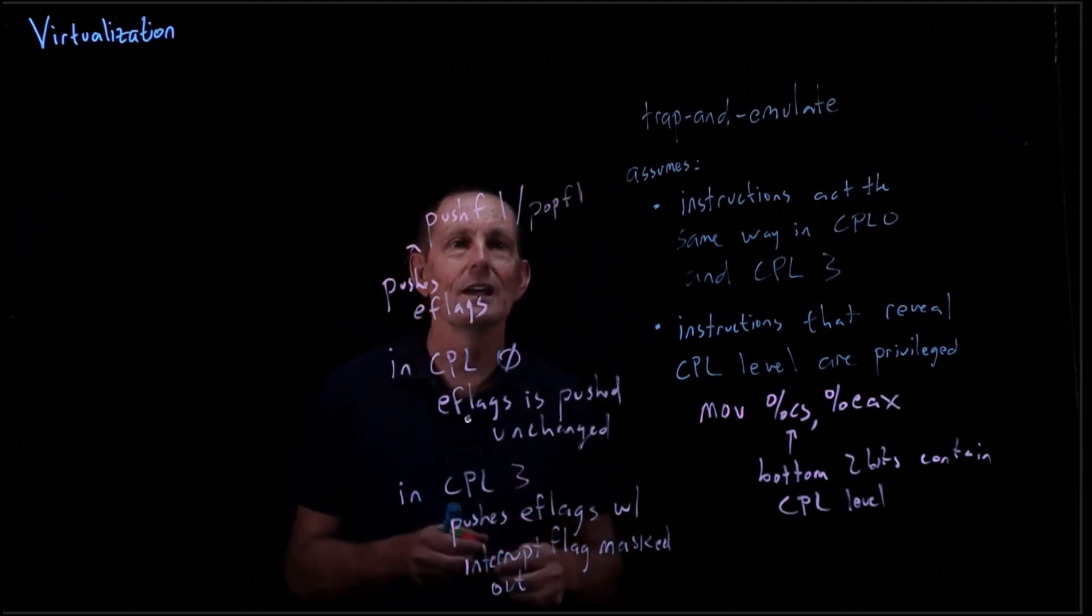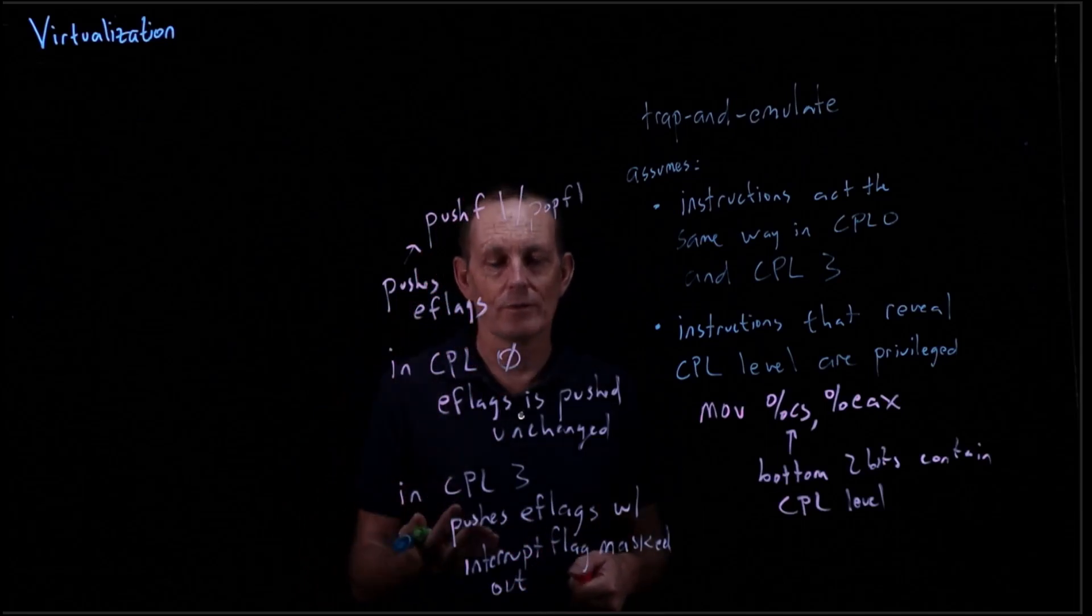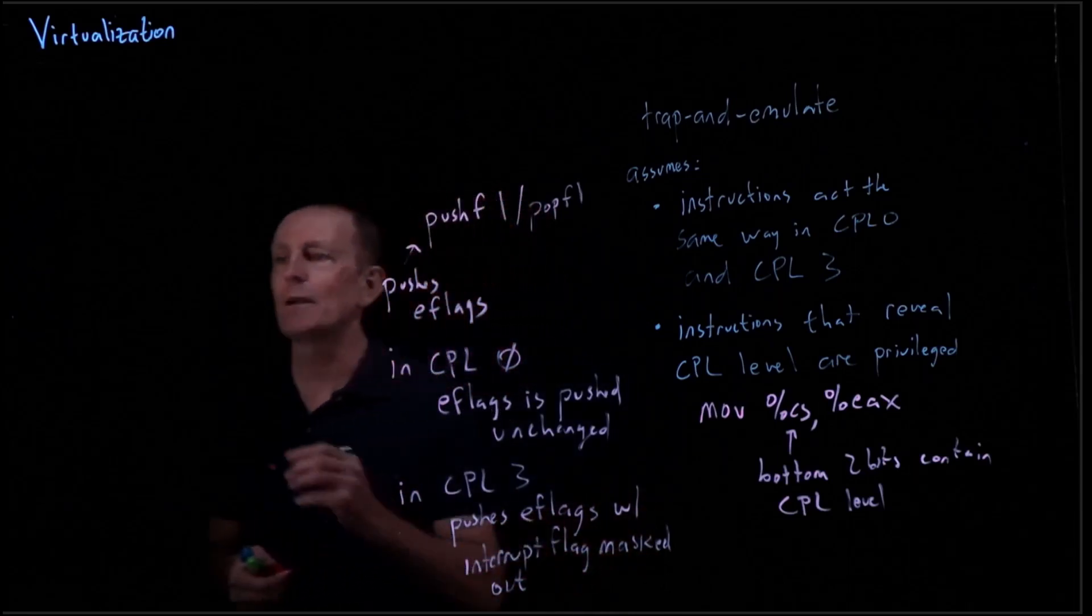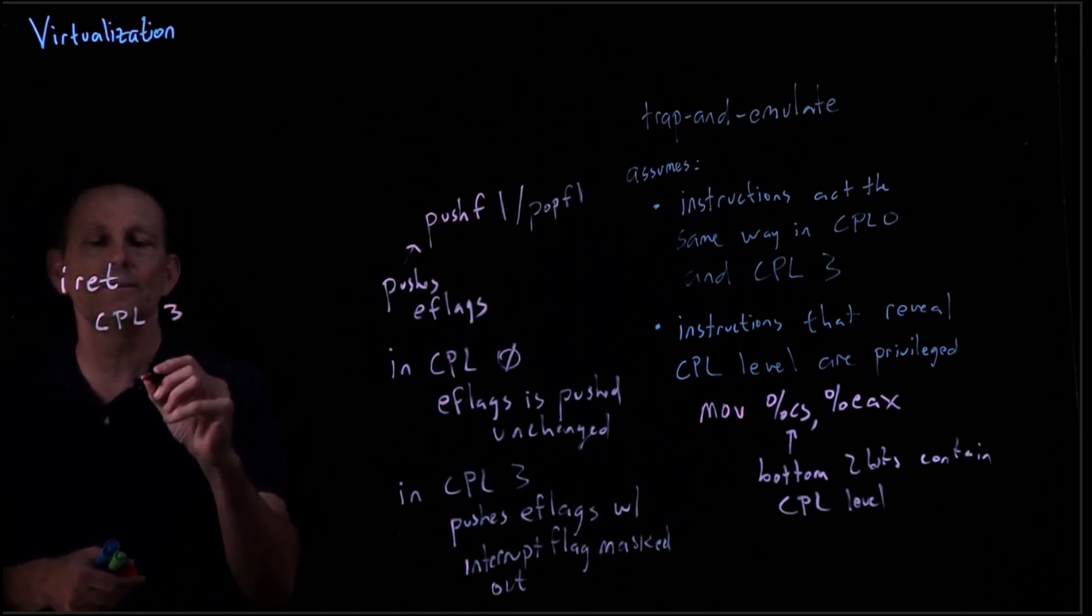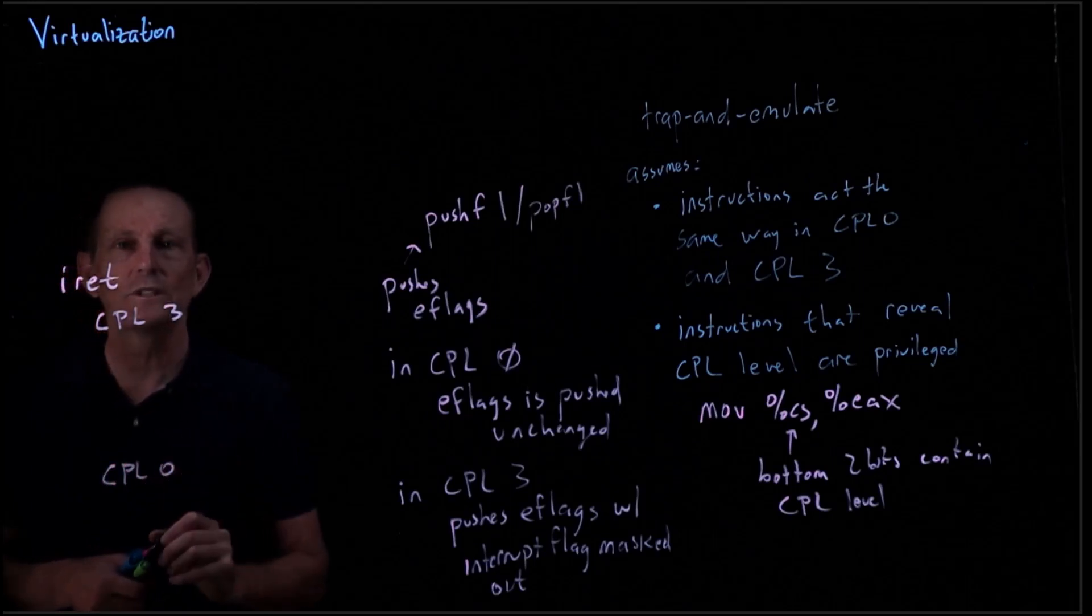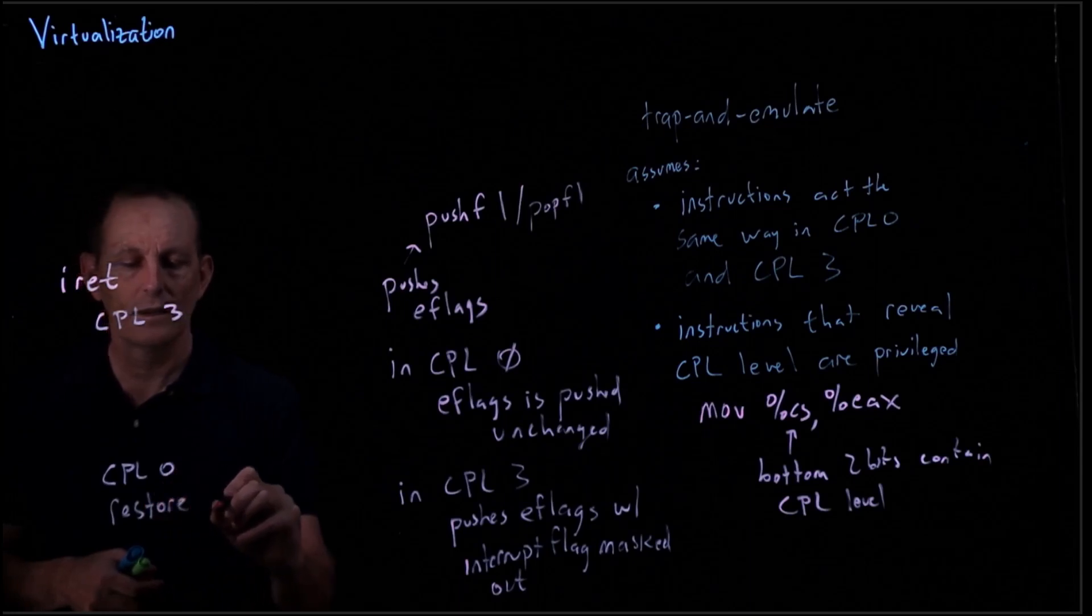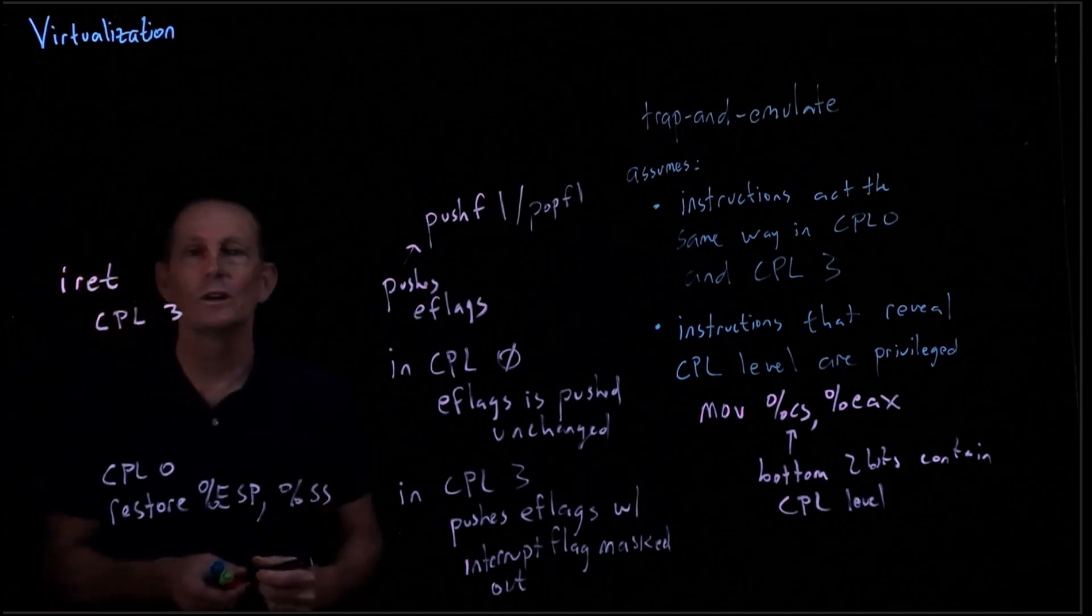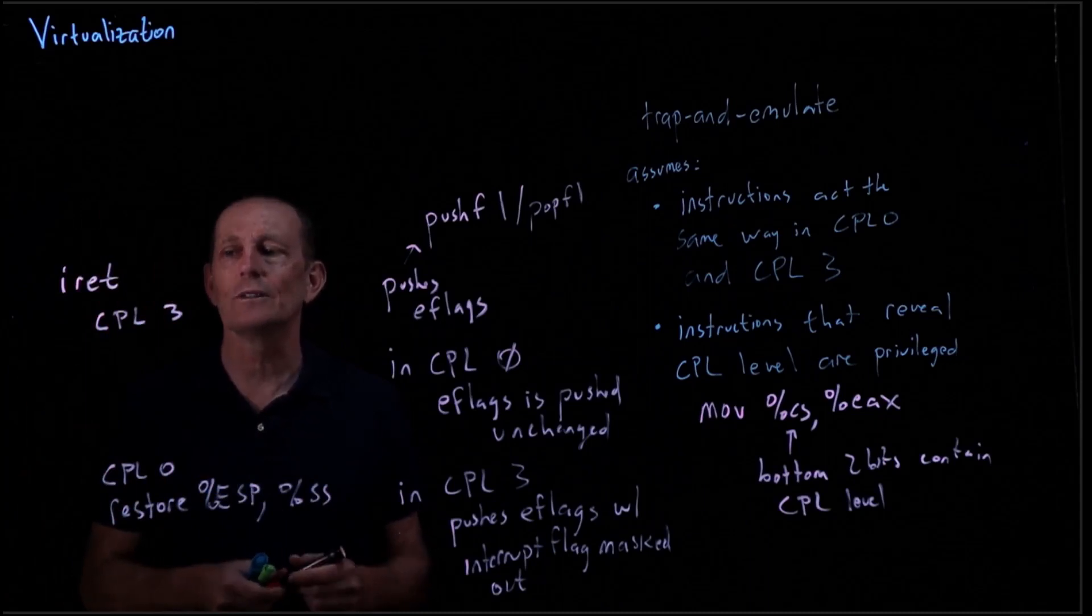Again, if you're in CPL3 actually, even if the flags in the stack say that the interrupt is on, we're going to be going ahead and masking that. Another example is iret. If you're in CPL0, what's going to happen is it's going to restore from the stack the stack pointer and the stack segment, because when we did a trap those were saved because we were changing ring levels, changing CPL levels.